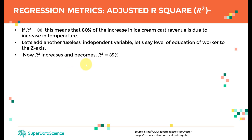Now let's look at adjusted R-square. If R-square equals 80, that means 80% of the increase in ice cream cart revenue is due to the increase in temperature. Suppose we add another useless independent variable — for example, ice cream revenue as a function of temperature and also the level of education of the worker, which doesn't make much sense because education doesn't mean much here.